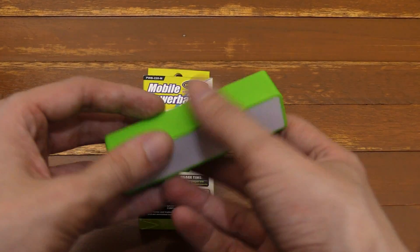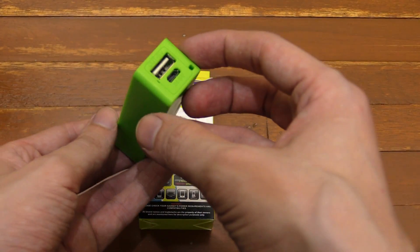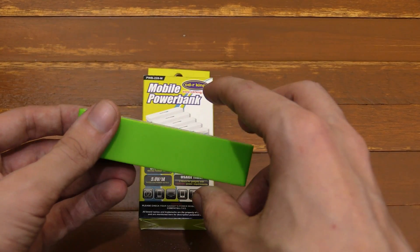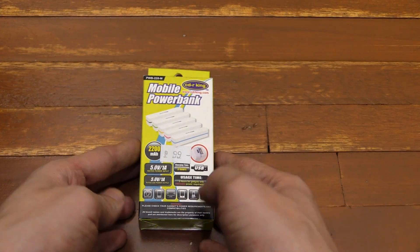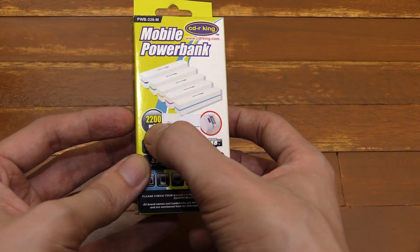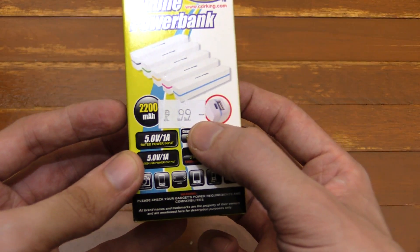Hi everyone, a couple weeks ago I reviewed this power bank from CDR King, which was 150 pesos, 2200 milliamp hour, and now they've got a new one which is also 2200 milliamp hour, but it's just 99 pesos.